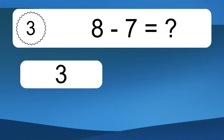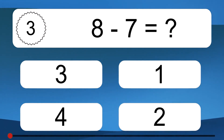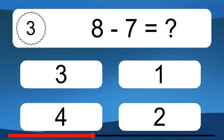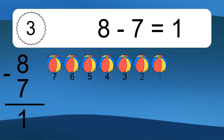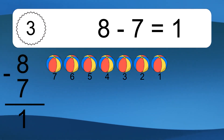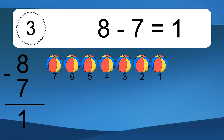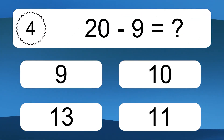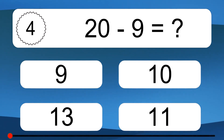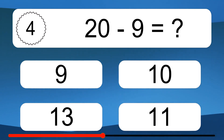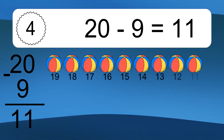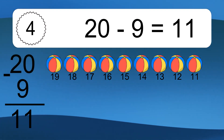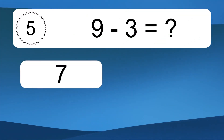8 minus 7 equals what? 20 minus 7 equals 1. Let's count it: 7, 6, 5, 4, 3, 2, 1. 20 minus 9 equals what? 20 minus 9 equals 11. Let's count it: 19, 18, 17, 16, 15, 14, 13, 12, 11.